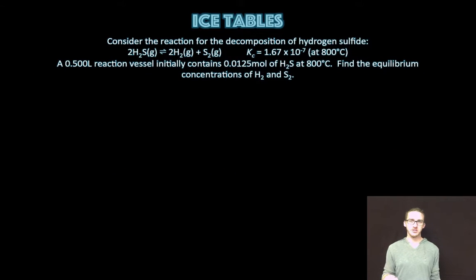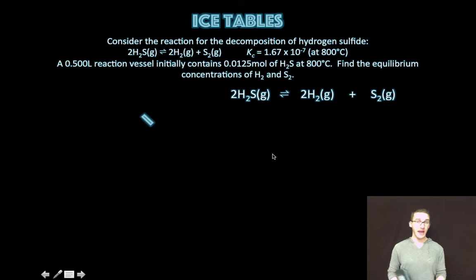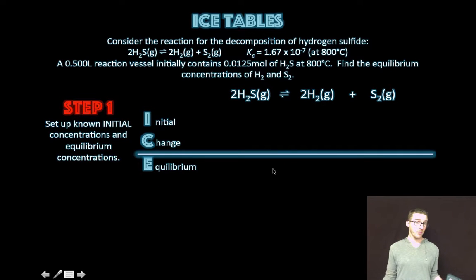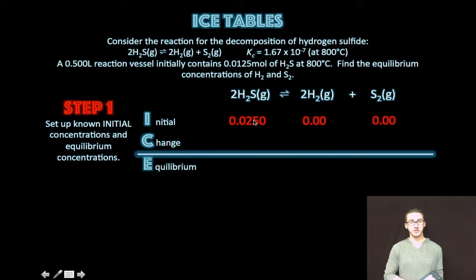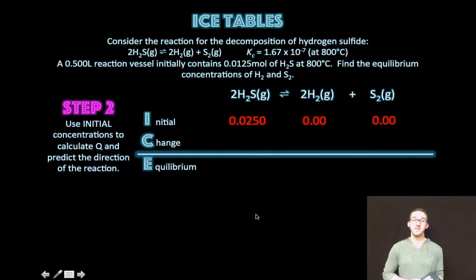Example three: consider the reaction for the decomposition of hydrogen sulfide. A 0.500 liter reaction vessel initially contains 0.0125 mol of H2S at 800 degrees Celsius. Find the equilibrium concentrations of H2 and S2. Step one: set up known initial concentrations. The initial concentration is 0.0250 molar — remember to convert moles and liters to concentrations in your ICE table. We aren't given any equilibrium concentrations, so we determine Q, compare it to K to decide which direction the reaction shifts.